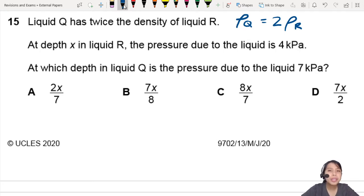At depth X in liquid R, the pressure is 4 kilopascals. I guess I could draw something to help me out here.